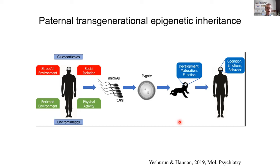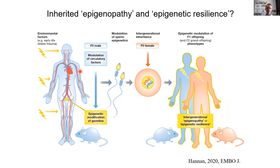All of this comes together in terms of paternal transgenerational epigenetic inheritance: how environmental factors like stress and physical activity might alter sperm epigenetics and thus change offspring brain development, maturation of function, and possibly change risk and resilience with respect to a whole range of different brain disorders. We're particularly interested in how different environmental factors may send signals via circulation down to male germ cells to alter sperm epigenetics. Maternal and paternal exposures together could lead to either epigenopathy — increased predisposition to disorders via epigenetics — or epigenetic resilience.